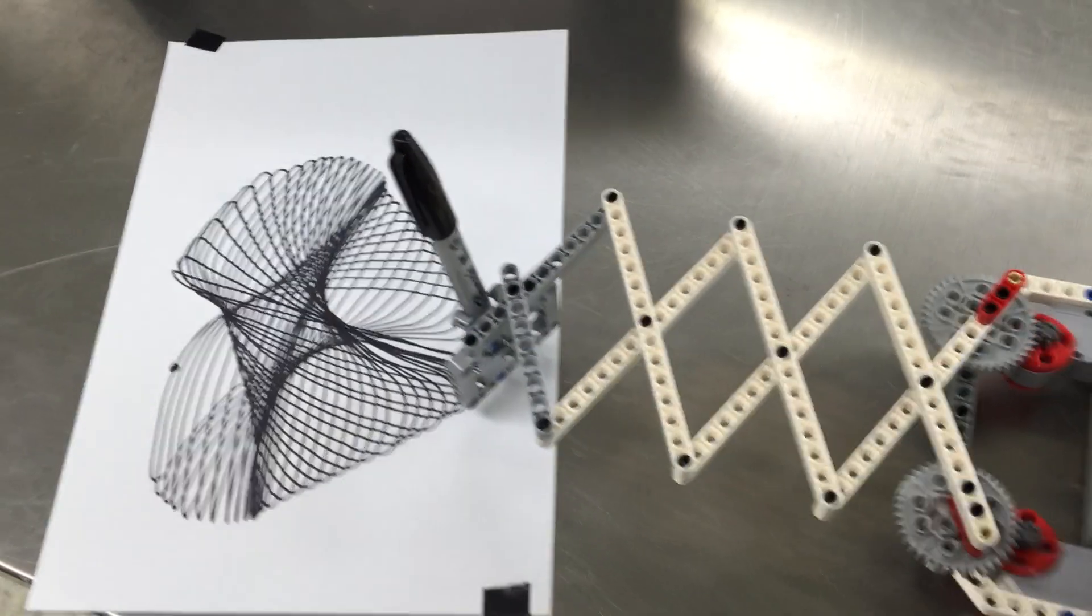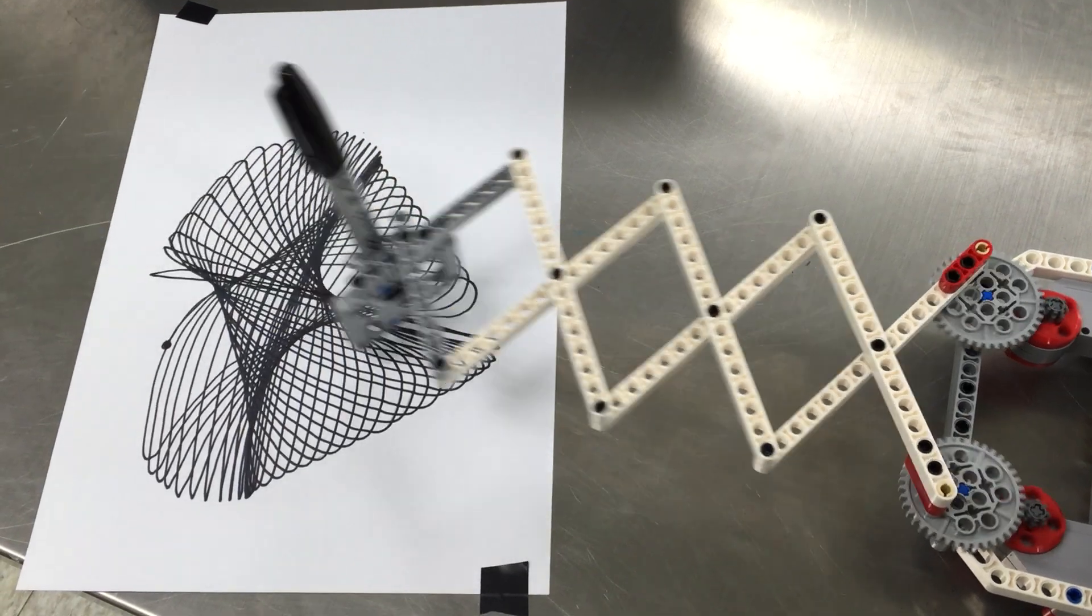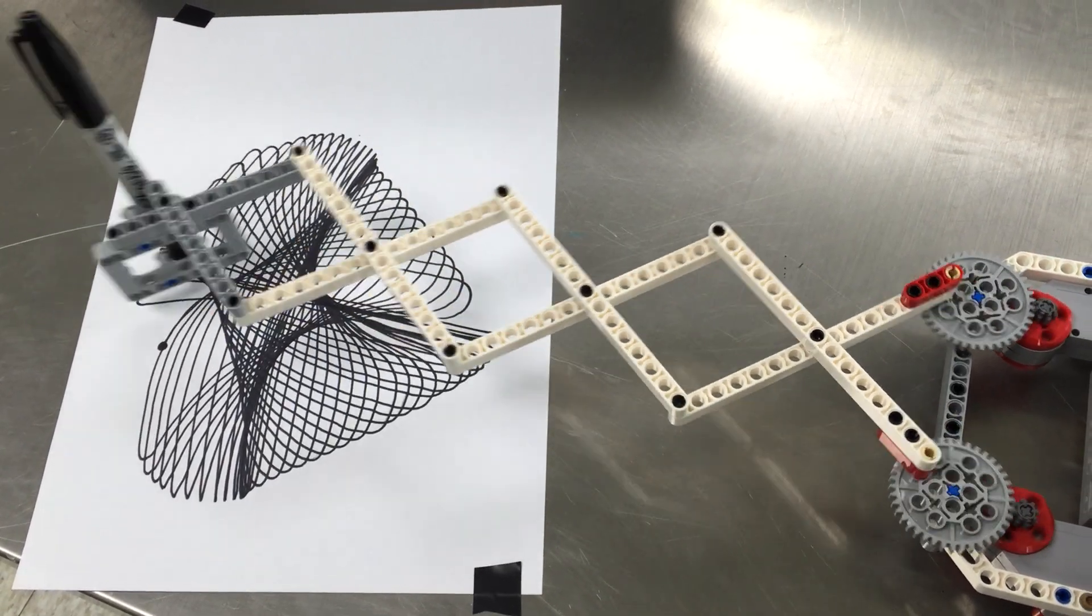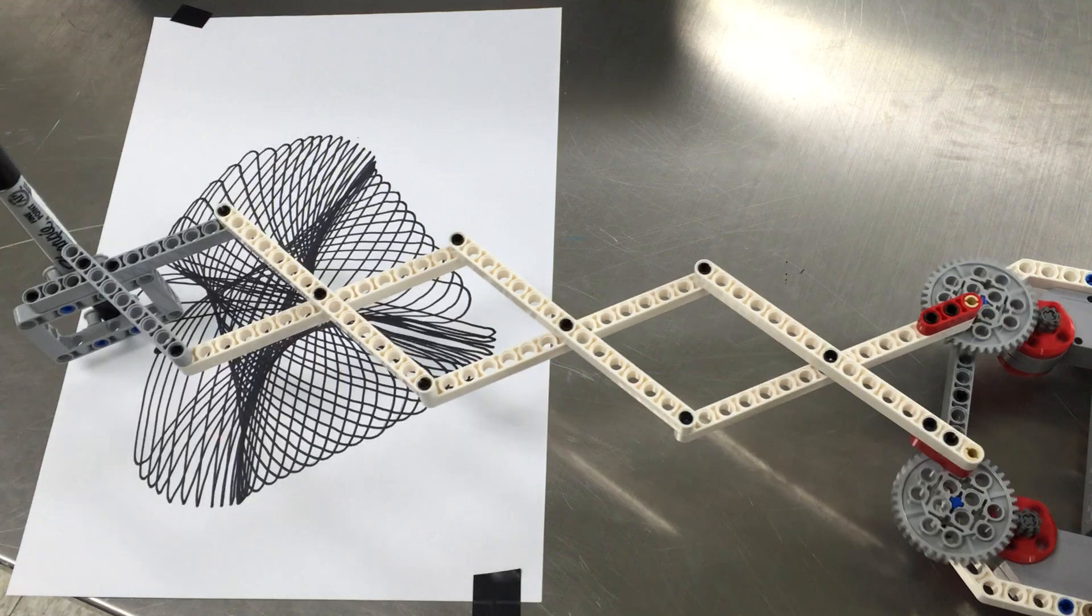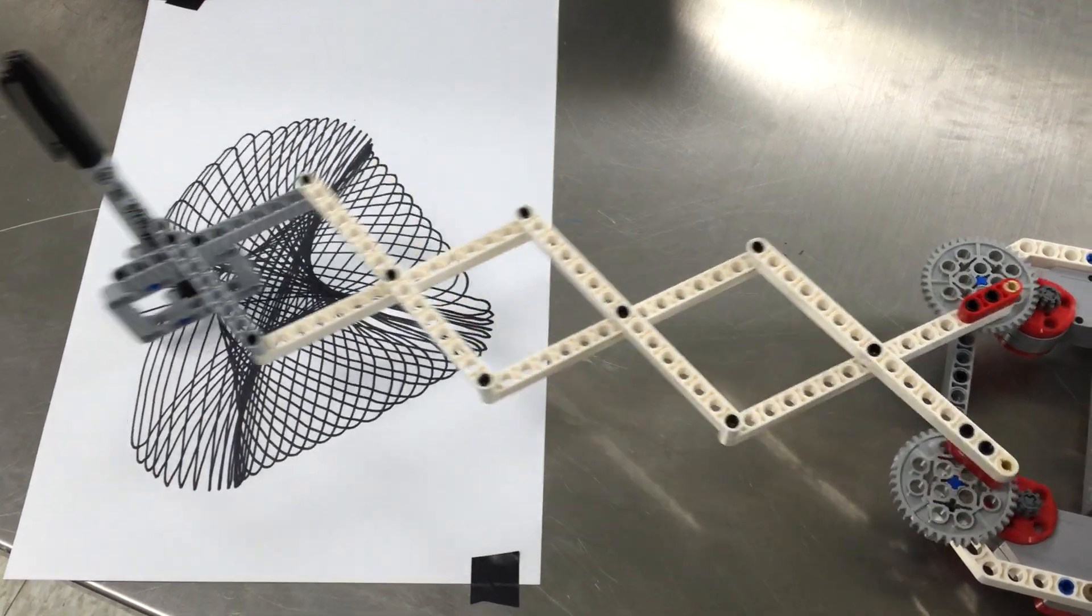And it makes this cool spiral graph pattern. All this is is one EV3 educational set. You could probably do it with a home set as well.